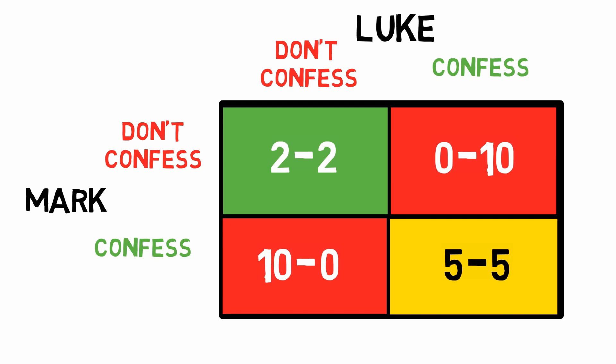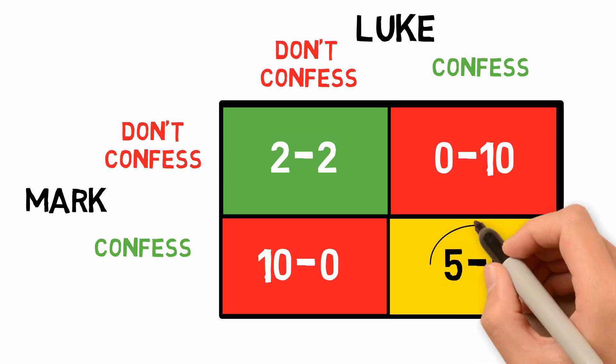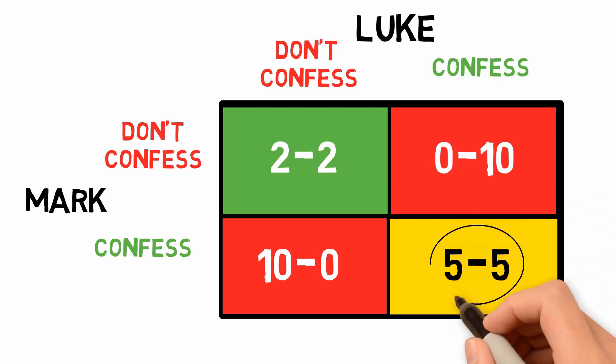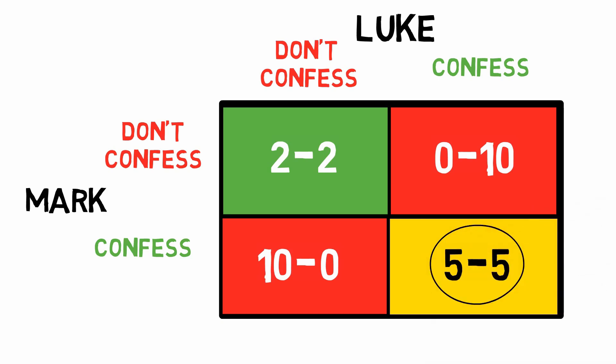So what is the right choice? The correct choice is to confess, hoping that the other person will not confess. But if they both confess, the result will be that they each receive a five-year prison sentence — and this is the final solution of this example of Game Theory. If they both play optimally, then they both end up in prison for five years.